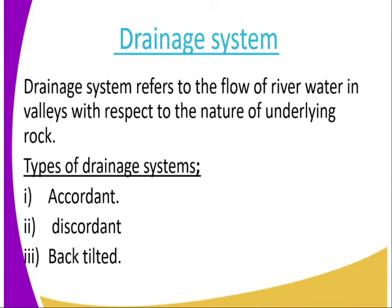Then we go to the drainage system. Drainage system refers to the flow of the river water in various ways with respect to the nature of the underlying rock — how it is flowing with respect to the nature of underlying rock. There are three types of drainage systems: one, concordant; number two, discordant; and insequent.